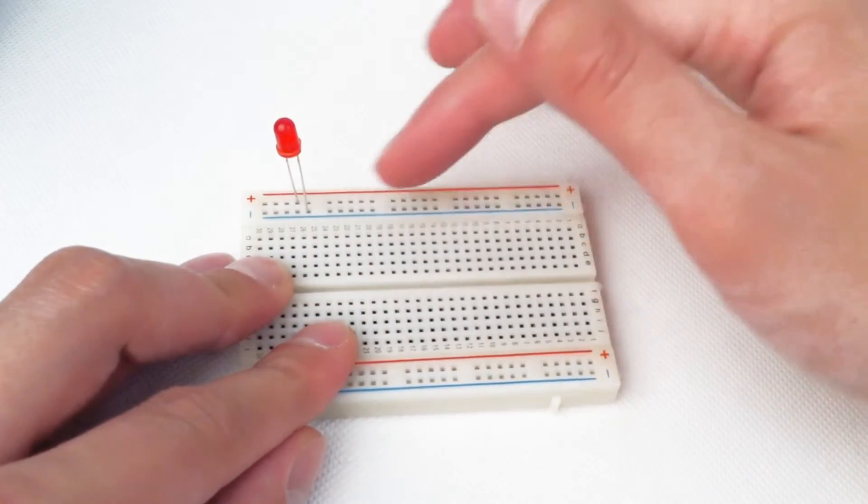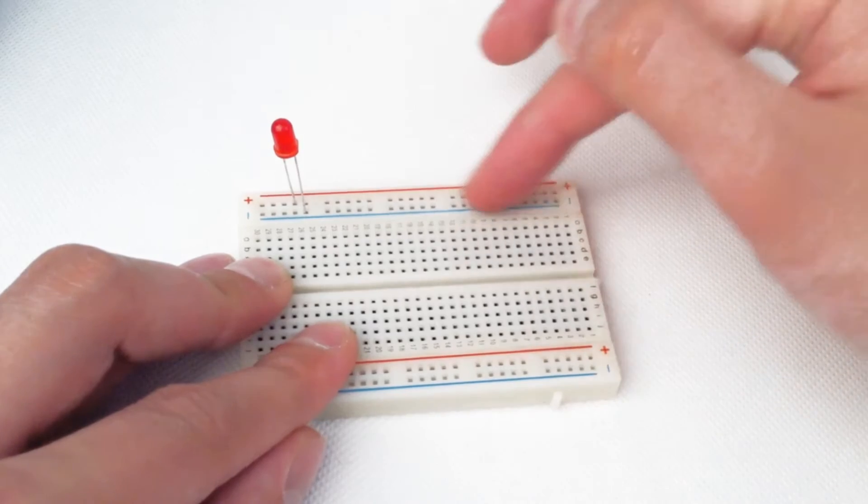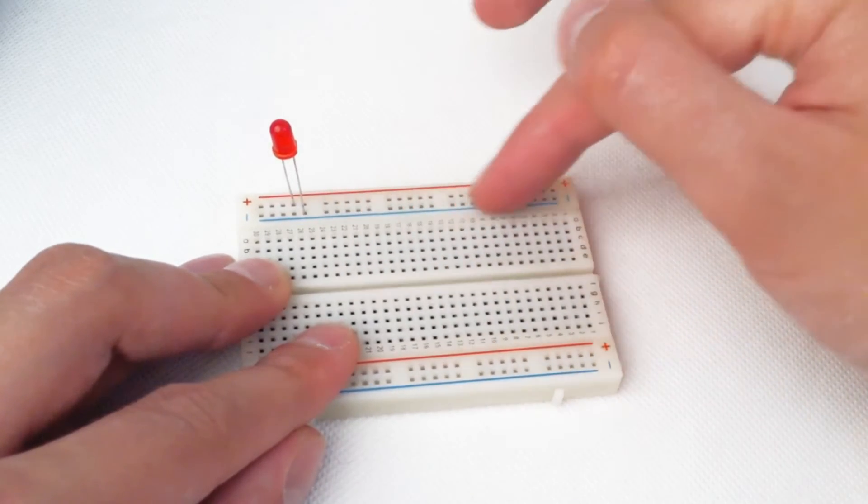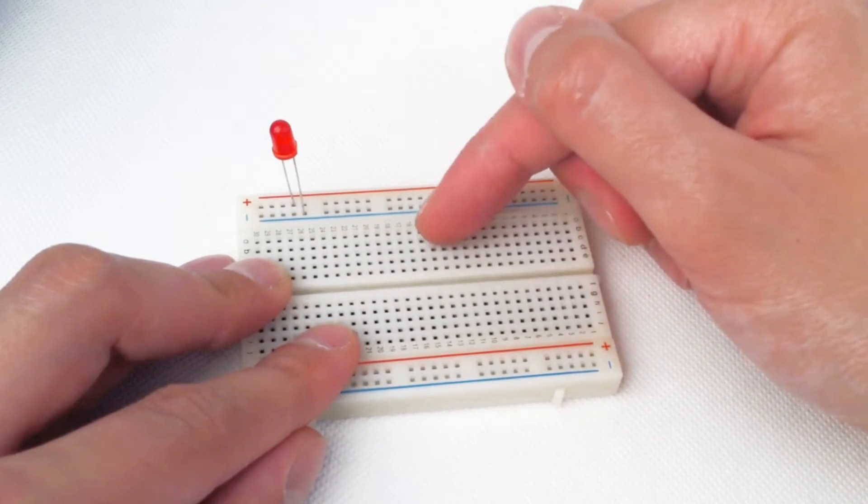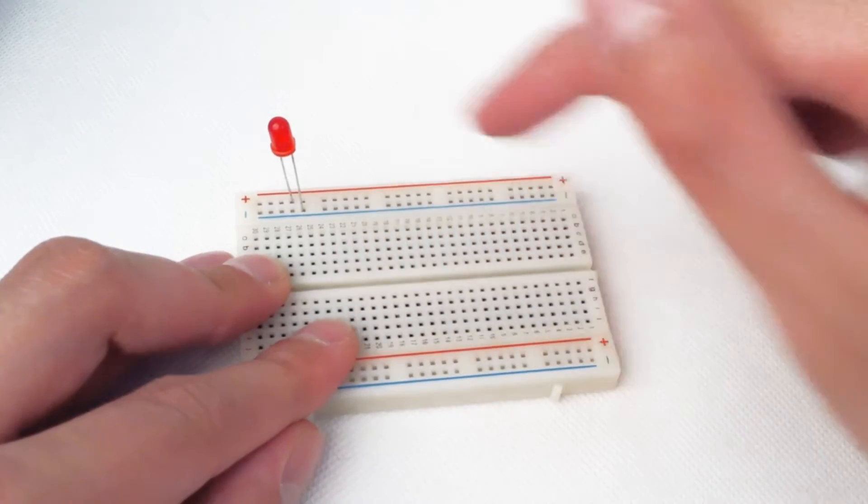Remember this is our power rail. Each set of holes, entire row, is electrically connected, so we have 2 rows here. Whereas the rest of the breadboard, these sets of 5 holes, each set of 5 holes is electrically connected.